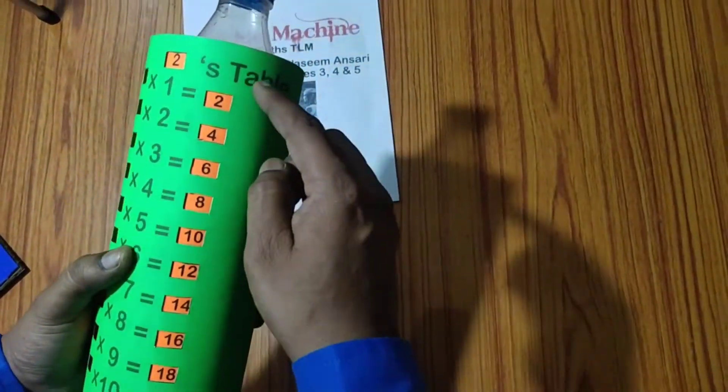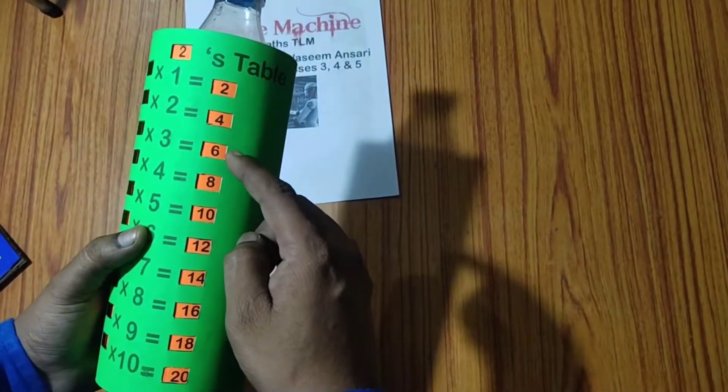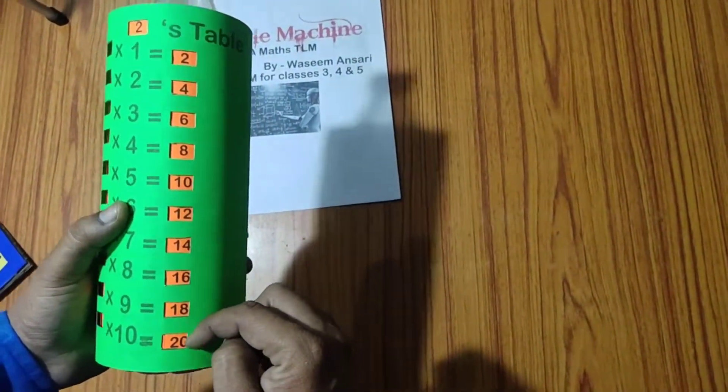2 times 3 is 6. Similarly 4, 6, 8, 10, 12, 14, 16, 18, 20.